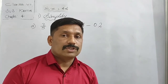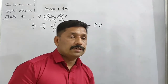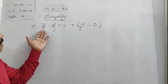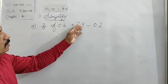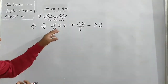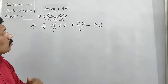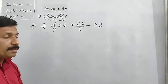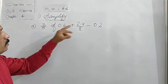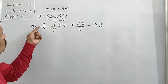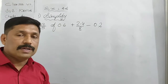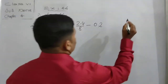So we move to the first question: simplify the following. The first question is 2 upon 5 of 0.6 plus 2.4 upon 8 minus 0.2. In this question there are decimal numbers and fractions. It is better to change the fractions into decimals first, then solve. First of all, 2 upon 5 — we divide the numerator by the denominator.